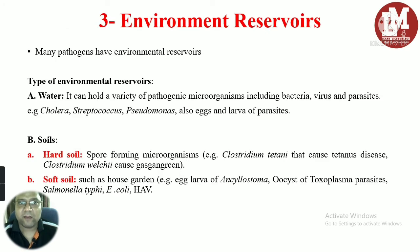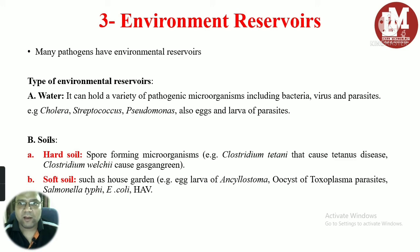The third category is environmental reservoirs. A large number of microorganisms use environmental factors as reservoirs. Two major categories of environmental reservoirs are water and soil. Water can hold a variety of pathogenic microorganisms including bacteria, viruses, and parasites — for example, cholera, Streptococcus, Pseudomonas, and eggs and larvae of various parasites.